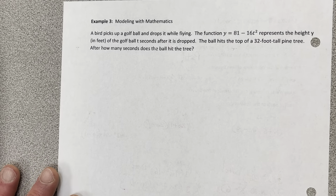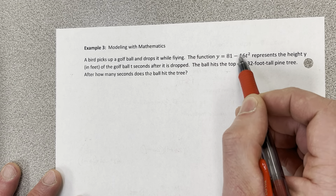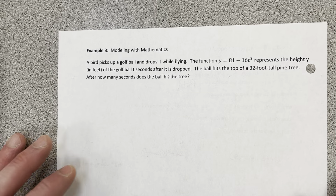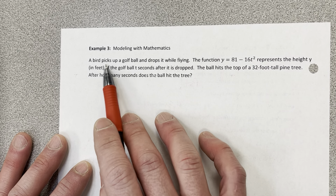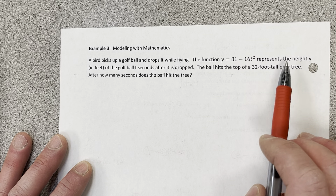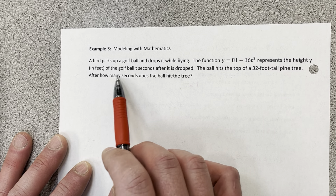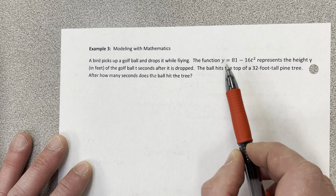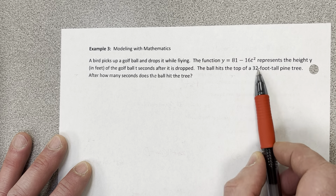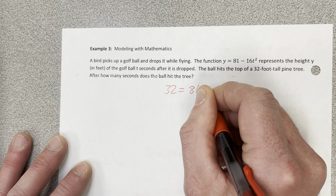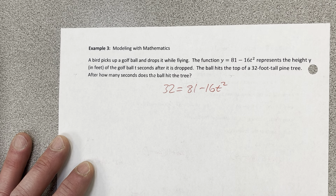On the back we have a vertical motion model. I love these problems because they deal with gravity in the real world — gravity accelerates objects at a consistent rate, which is why we can write equations for it. A bird picks up a golf ball; the equation represents the height of the ball in feet t seconds after it's dropped. The ball hits the top of a 32-foot tall pine tree. The bird is at 81 feet, drops the ball, and we want to know how long it takes to drop to 32 feet.